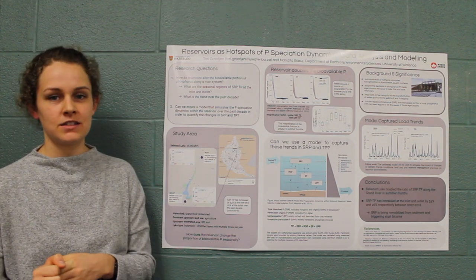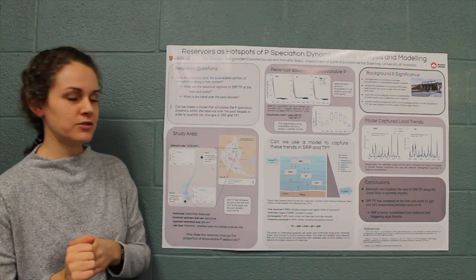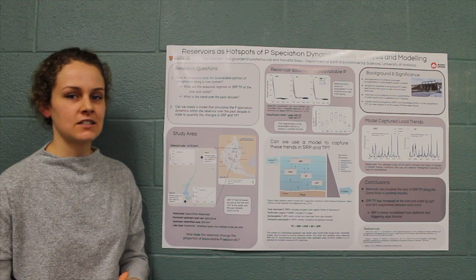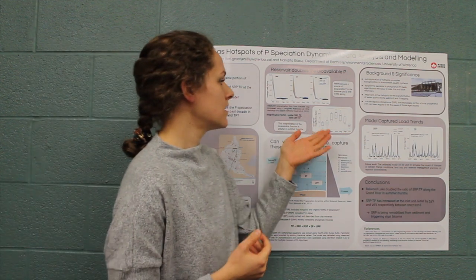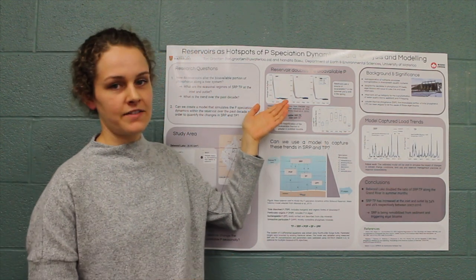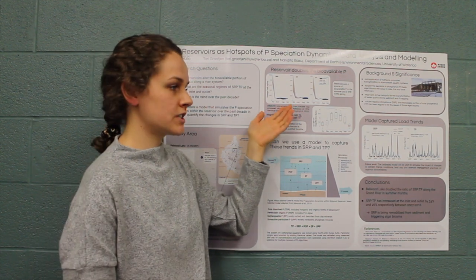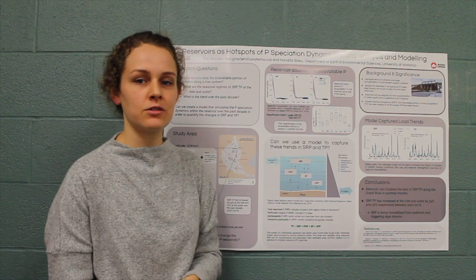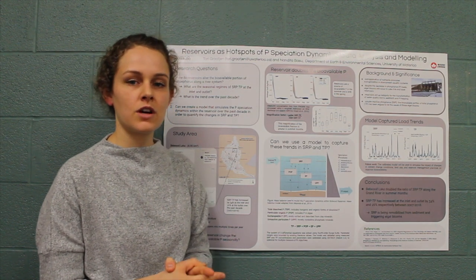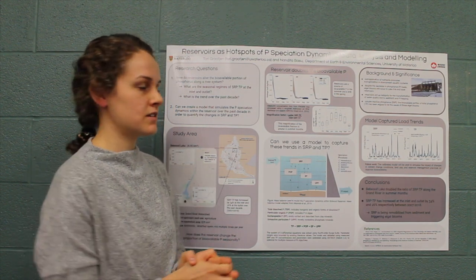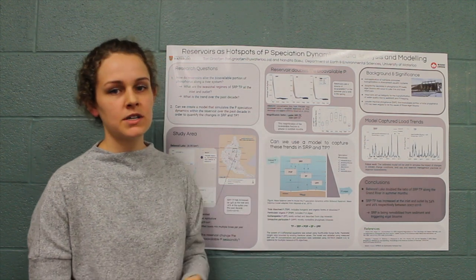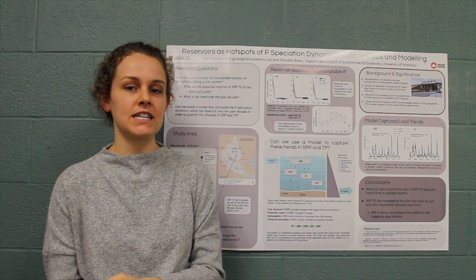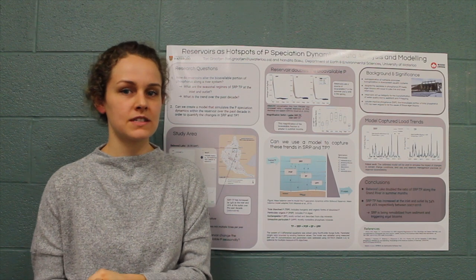The next question is how is the phosphorus being changed seasonally? I found that in April, during spring runoff, the inlet loading was greater than the outlet loading, meaning that the reservoir was a sink for SRP. From May to October, the outlet was greater than the inlet, meaning that the reservoir acted as a source of SRP.